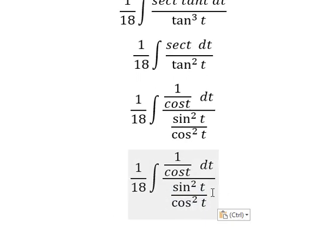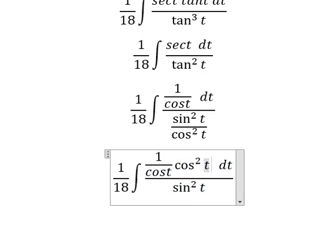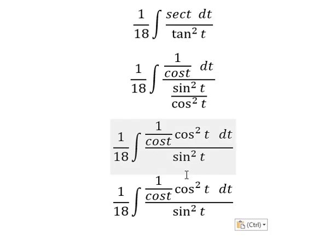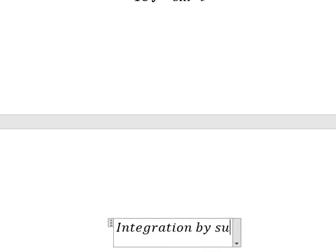So I will put cosine squared t here. So cosine t, cosine t, we can cancel. And now we can use integration by substitution.